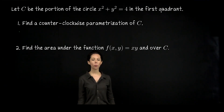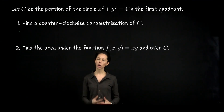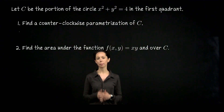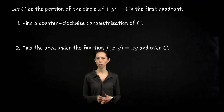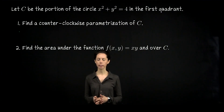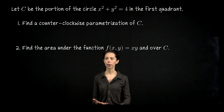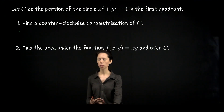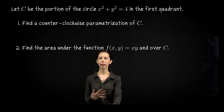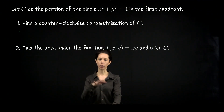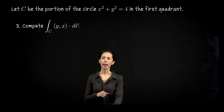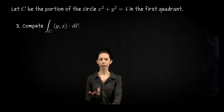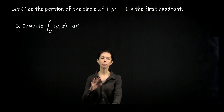In this exercise, we are going to consider a curve in the first quadrant of the xy plane. Let C be the portion of the circle of radius 2 in the first quadrant. We will parametrize this curve, then do a scalar line integral — evaluating f(x, y) = xy over the curve — and then do a vector line integral. We'll set both up and evaluate them completely.